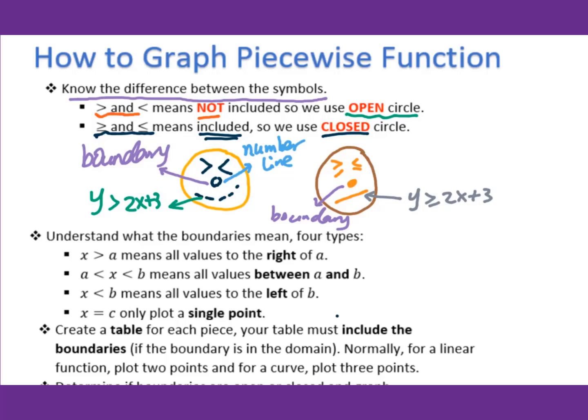For a number line, if you have greater than or equal to or less than or equal to, you have to use the closed circle.